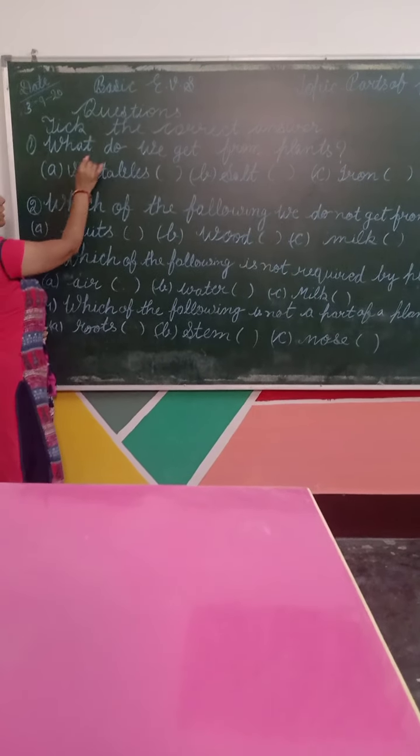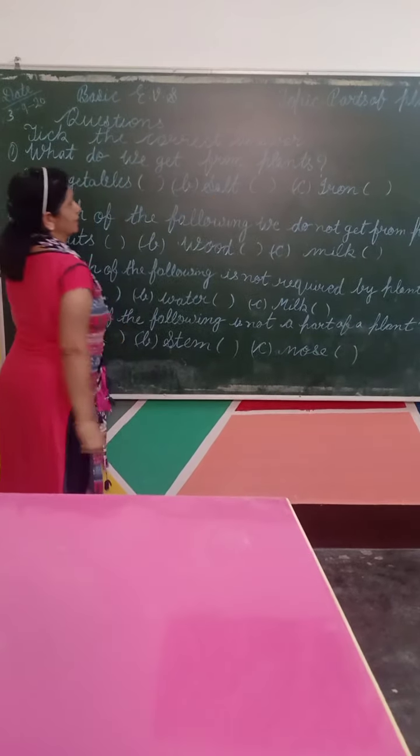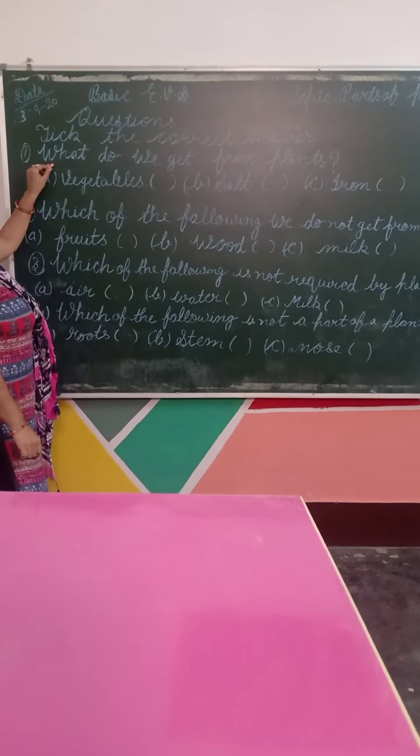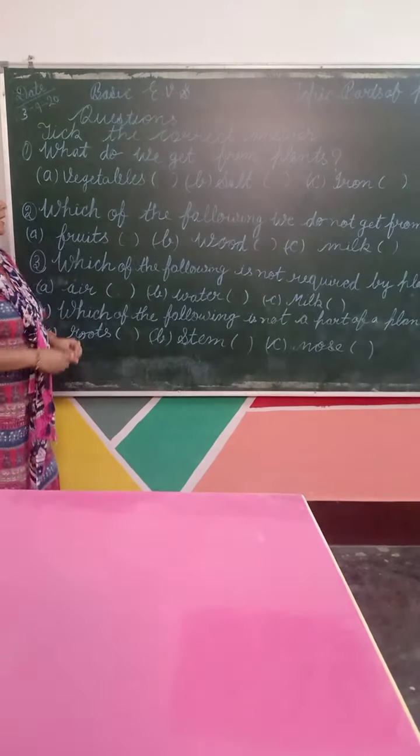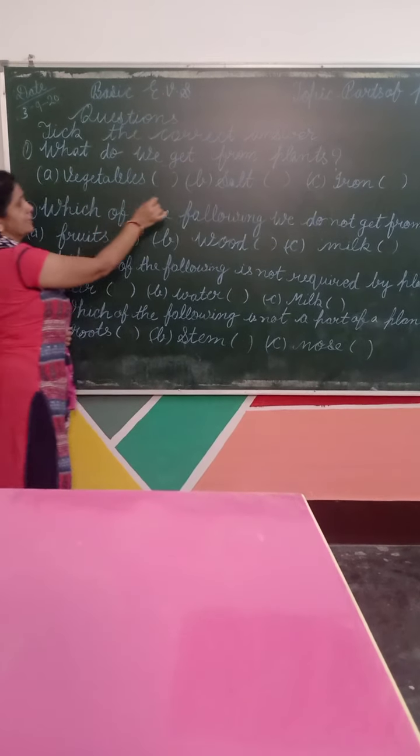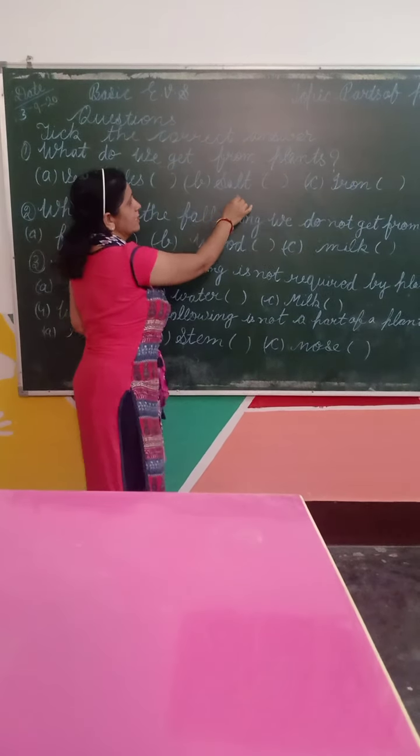Number 1, what do we get from plants? So, what do we get from plants? Number 1: Vegetables, B: Seeds, C: Iron.